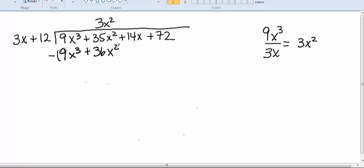Now let's subtract. The first term is always going to cancel out when we do the subtraction. So I like to just cross it off and then move on to the next term. 35x squared minus 36x squared is going to give us negative x squared. Now we need to bring down the next term in our division, which is 14x.